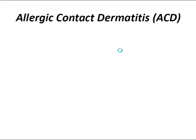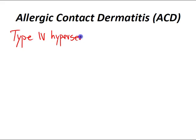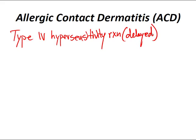Allergic contact dermatitis arises as a result of two essential stages: an induction phase, which primes and sensitizes the immune system for an allergic response, and an elicitation phase, in which the response is triggered. Therefore, ACD is termed a type 4 hypersensitivity or delayed hypersensitivity reaction involving a cell-mediated allergic response. Lesions occur at the site of contact.